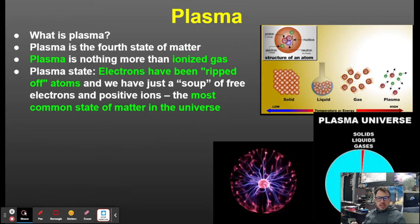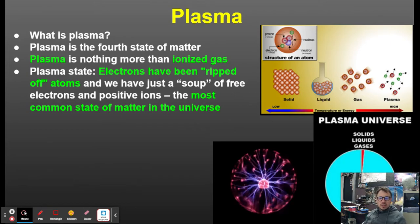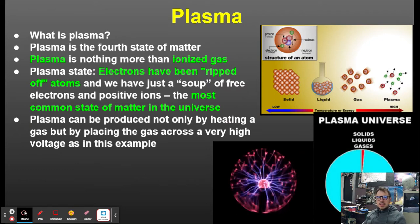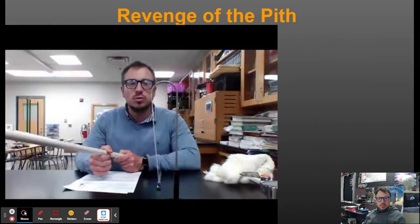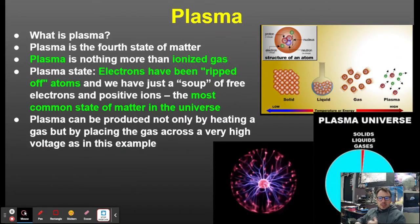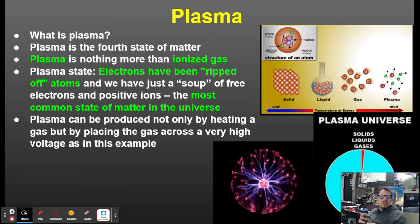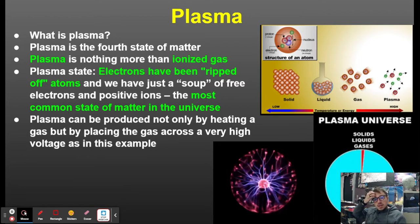In between galaxies and stars, there are free-floating positive hydrogen ions and electrons. Plasma is the most common state in the universe and can be produced not only by heating a gas, but by placing gas across a very high voltage — as in a plasma ball. Gases aren't very conductive of electricity, but plasma is, which is one of the properties that distinguishes it as a fourth state of matter.